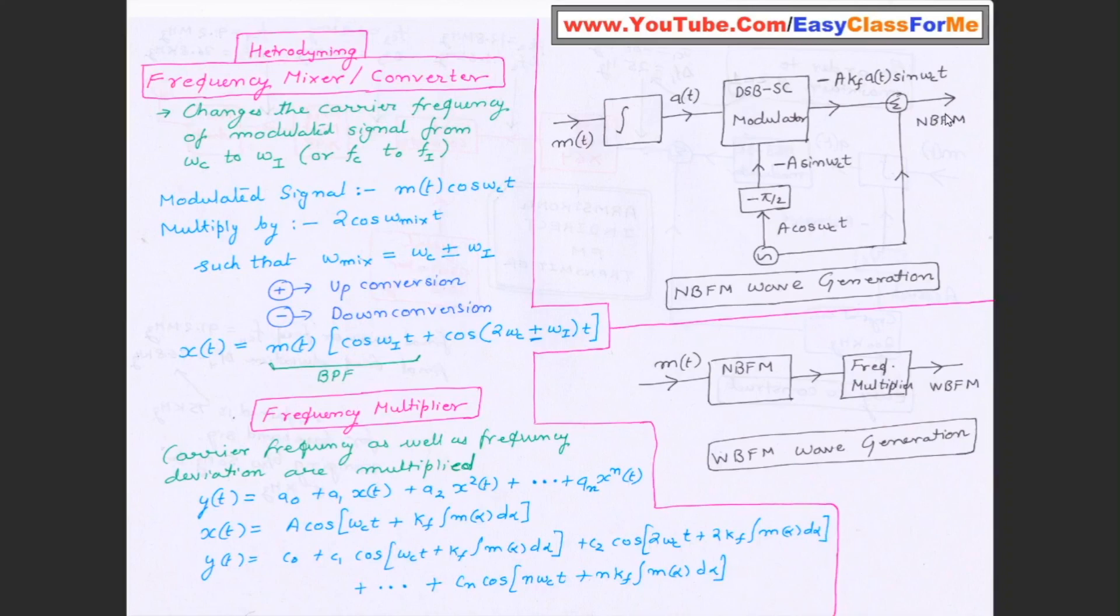So NBFM will be simply a cos ωct minus a kf at sin ωct. So we know that this is the equation of NBFM. So we can get NBFM just by using a double sideband suppressed carrier modulator. Now there are various questions which arise in one's mind after having this picture of NBFM.